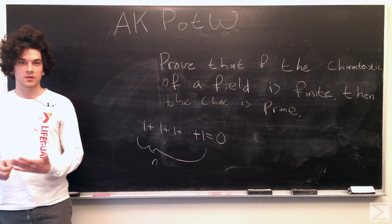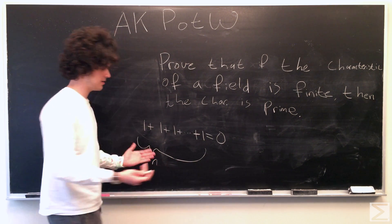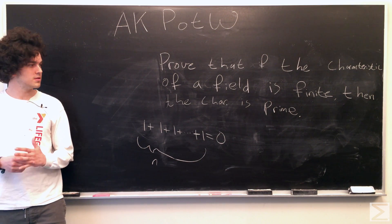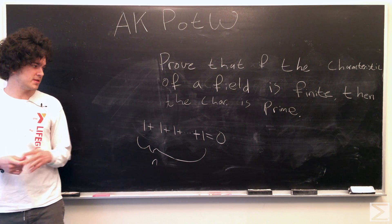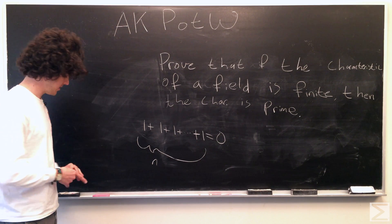This n is going to be called our characteristic, and if no such n exists, we call this an infinite characteristic and we would say that n is equal to zero. It doesn't make too much sense, but that's the way it is.